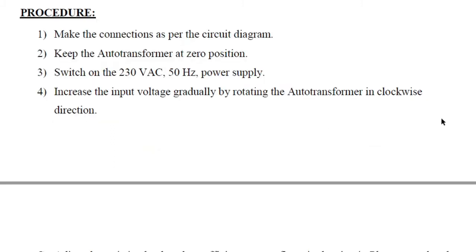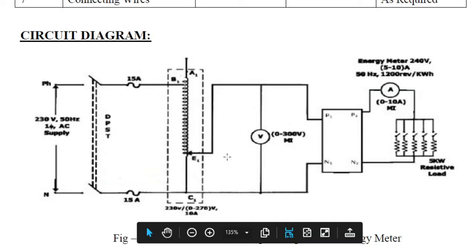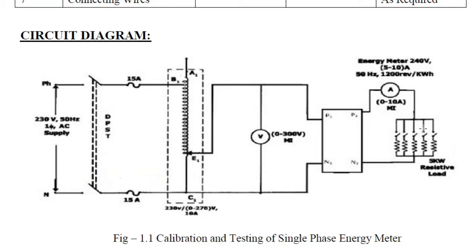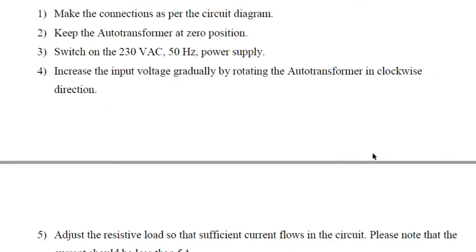First, make the connections as per the circuit diagram: connect the source to the single-phase variac, connect a voltmeter in parallel with the variac to measure the supply voltage, and connect the phase and neutral of the source side to the variac. The load side terminals are to be connected to the ammeter and resistive load. After making connections, keep the auto transformer knob at zero position.